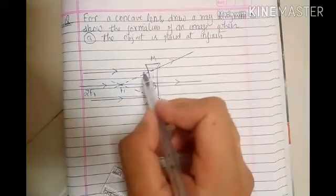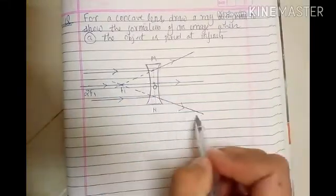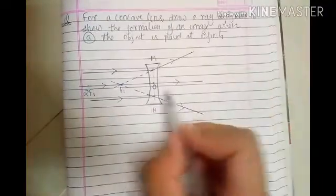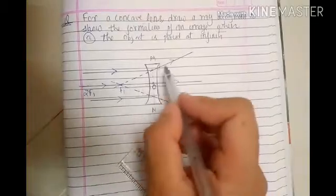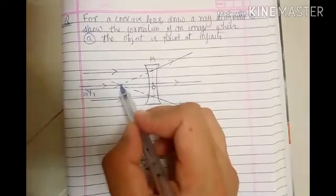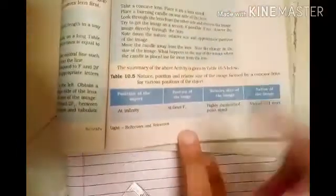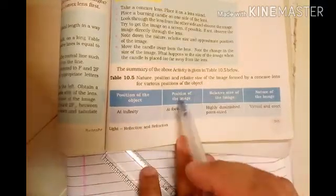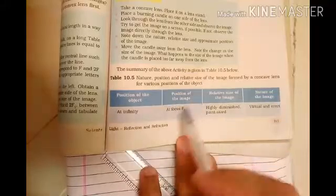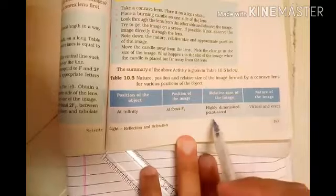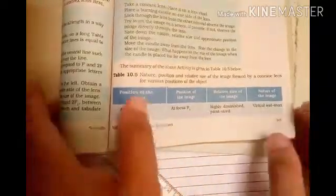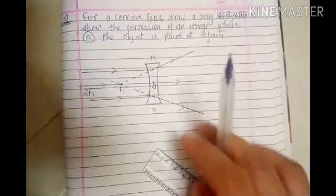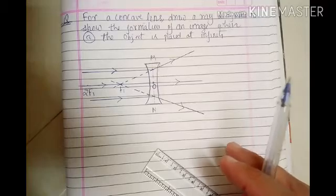The object is at infinity. These are the incident rays, the refracted rays, and one more incident ray through O — it passes without any deviation. Extend these lines, and the image is found at the principal focus. According to the textbook: position of object — at infinity; position of image — at focus f1; relative size — highly diminished, point-sized; nature of image — virtual and erect. This is how you draw figure 10.17(a).